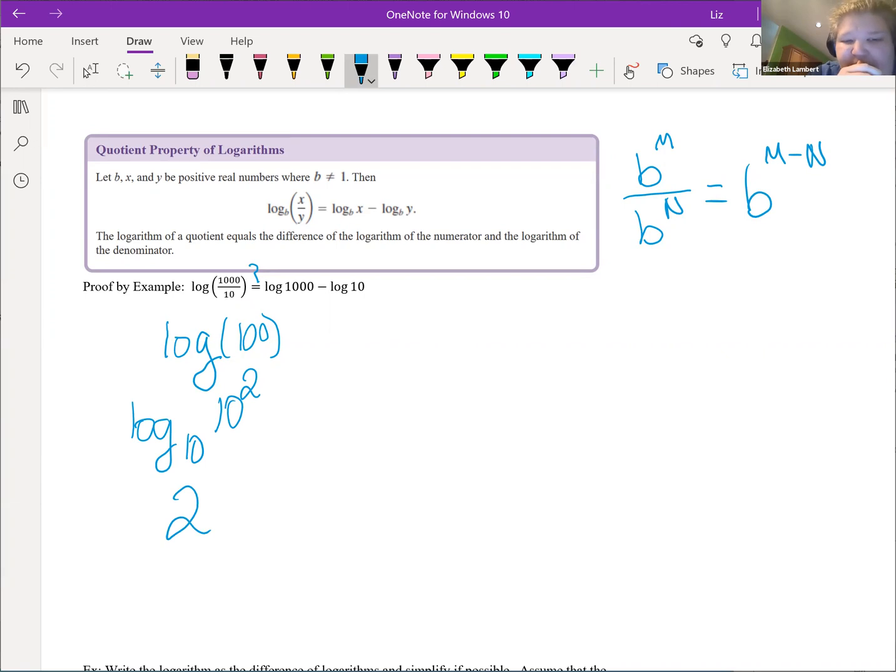So this is log base 10 of 10 to the second power. That all cancels out and we get 2. Now the other side, the log of 1000, well similarly to 100, that is a 10 power and that is 10 to the third.